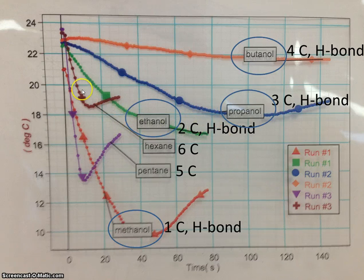Now we get into hexane, methanol, and pentane. They all kind of have similar slopes. So let's see if we can maybe explain that.